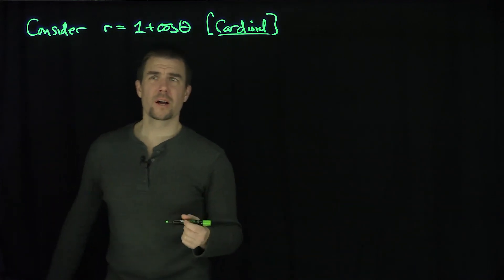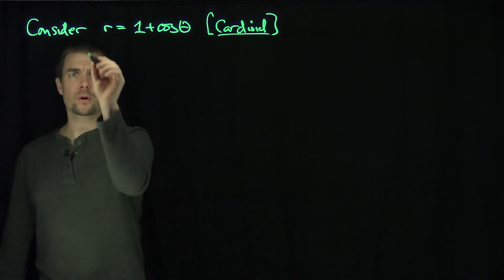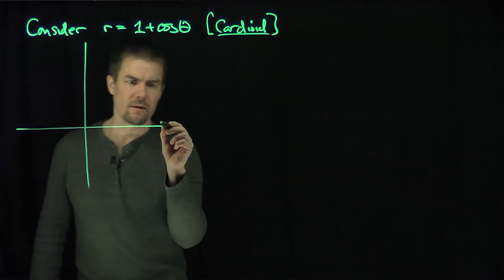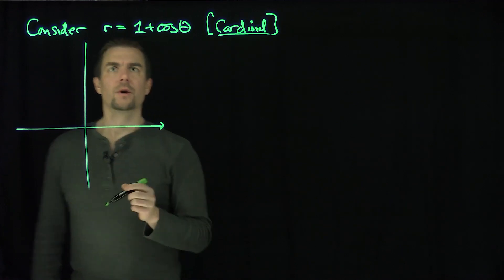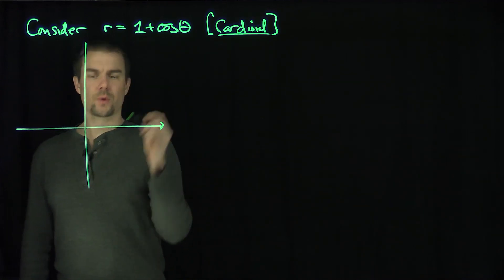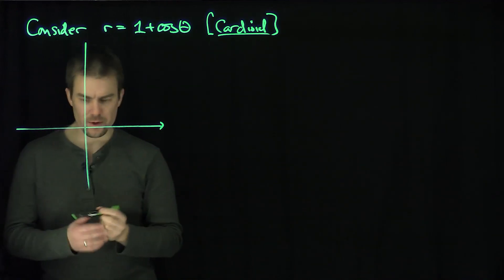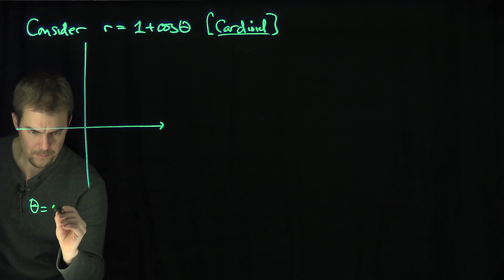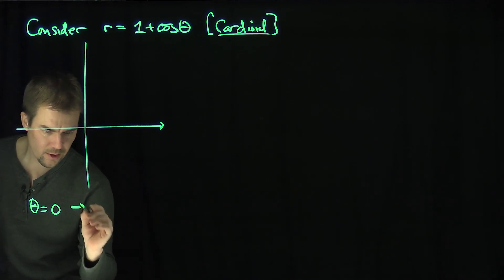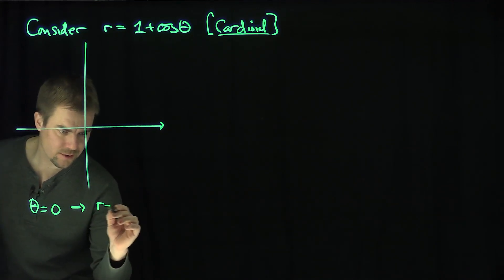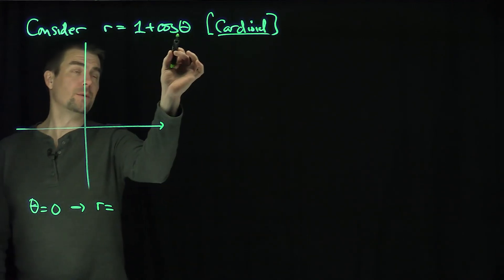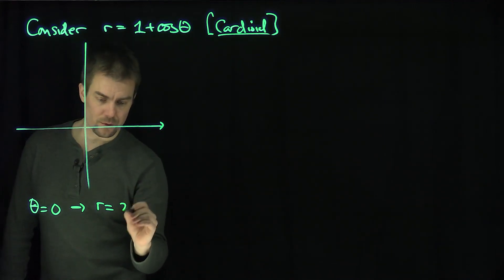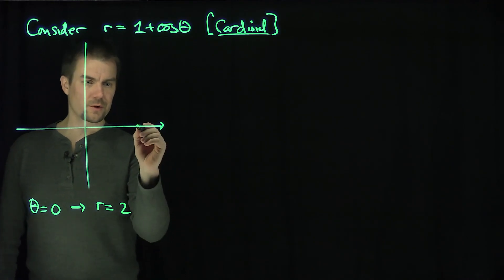So what does this curve look like? With polar curves, it's always good to plot a whole bunch of values. When theta is equal to zero, cosine of zero is one, so r is going to be equal to two. So we're over here at two.